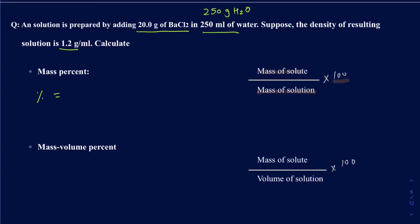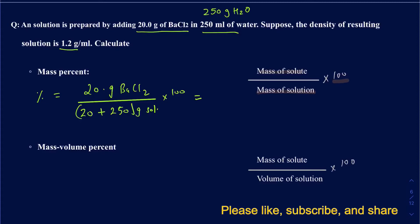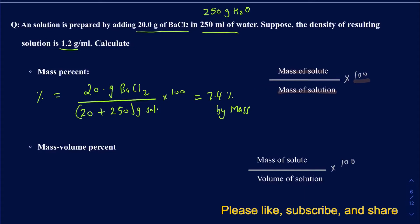Your solute is barium chloride, BaCl₂, and we have 20 grams of that. Your solution is the combination of the solute and the solvent, so it's 20 grams plus 250 grams, giving a total of 270 grams. So 20 divided by 270, times 100, gives 7.4% BaCl₂ by mass.